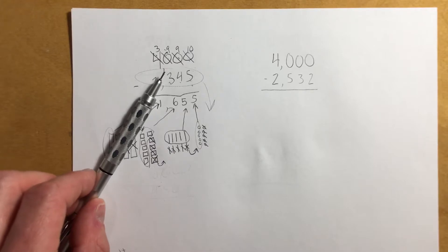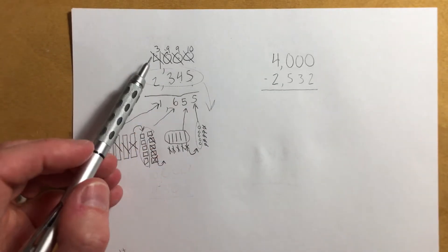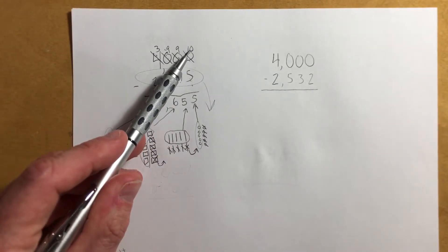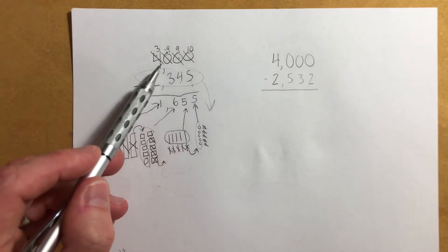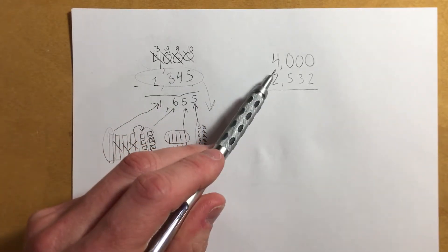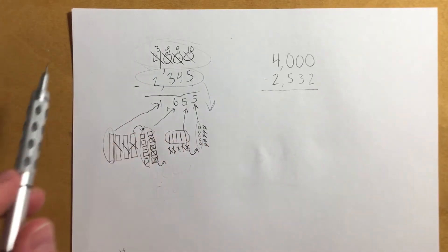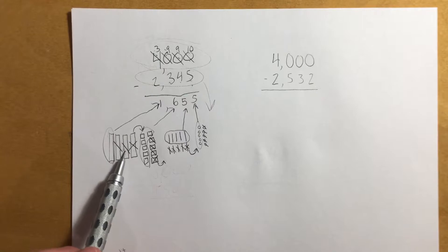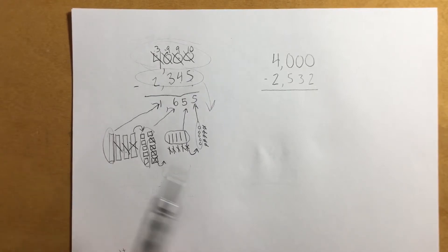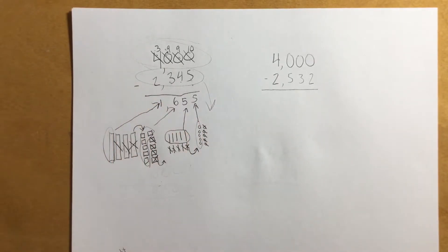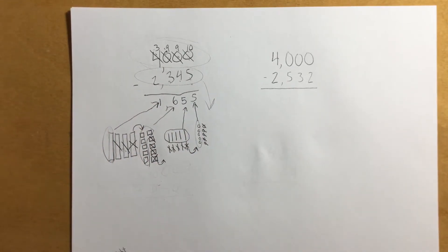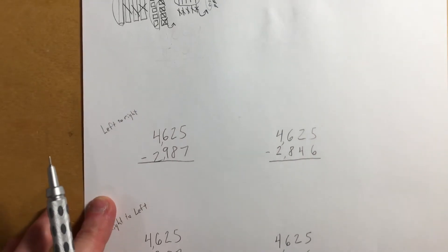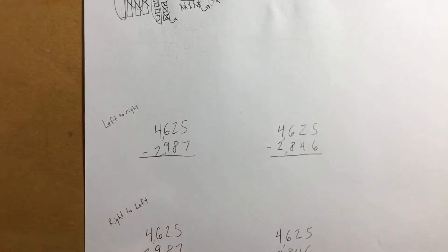I'd like you to go ahead and give this problem a try now that I've shown you this. Something to keep in mind is that because the 4,000 is the same, it's going to look pretty much the same on top, just a little bit different on the bottom. If you think the drawing will help, go ahead and do the drawing. If you think it's going to confuse you, don't do it.